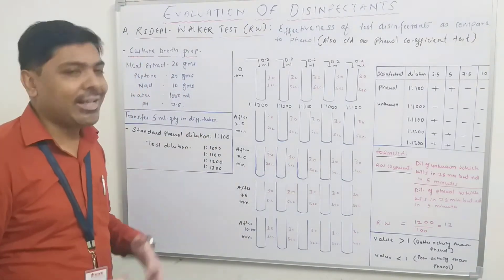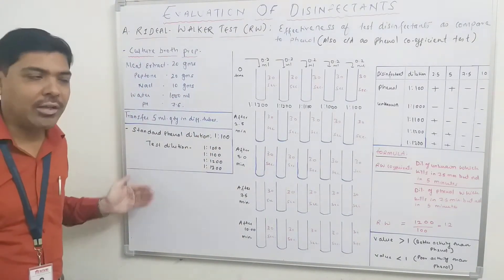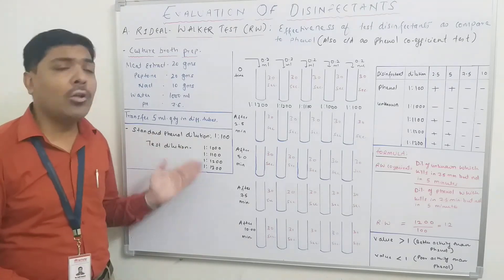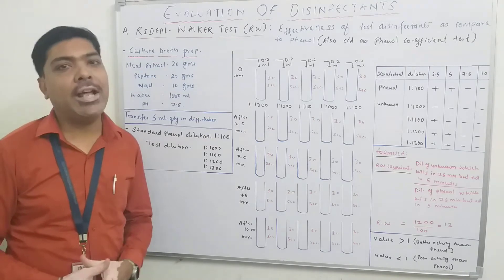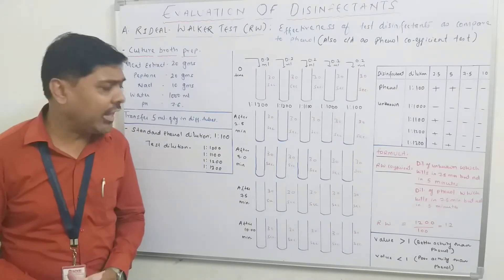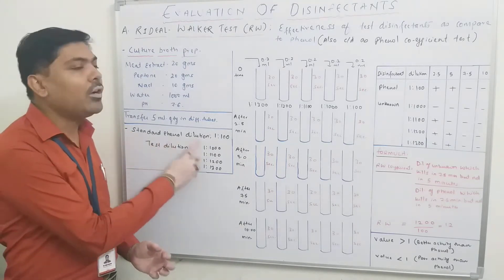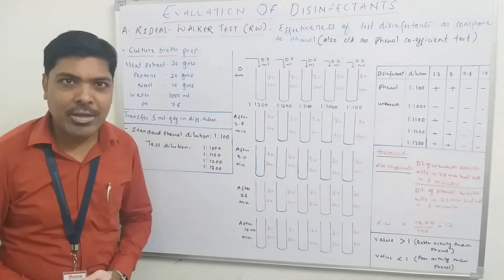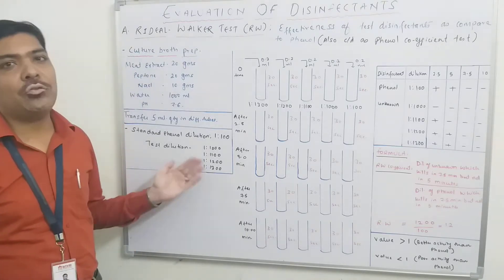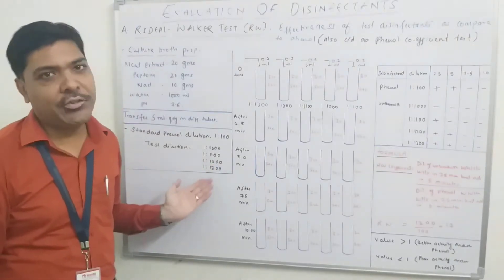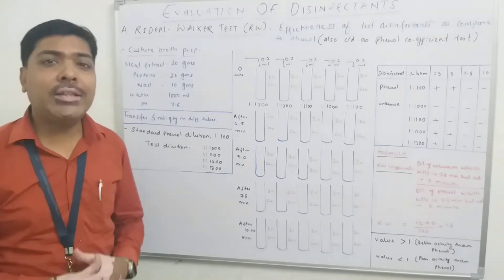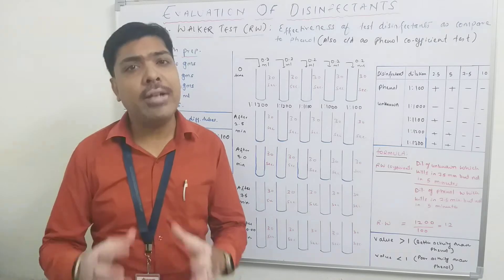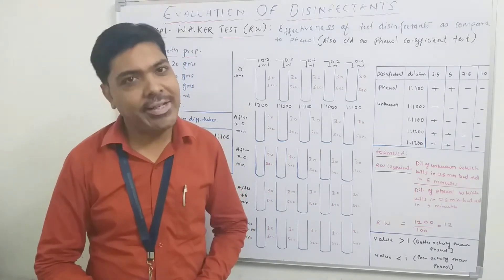Coming to the next step, we need two different solutions. Number one is a standard phenol dilution, and number two is the test dilution. The efficiency of phenol is best at 1%, so generally we use a 1:100 proportion for the phenol dilution. For whatever unknown or test solution needs to be tested, we prepare different concentrations: 1:1000, 1:1100, 1:1200, 1:1300, and so on. These are the two preparations we initially have to do — the culture broth, a dilution of phenol, and dilutions of the test disinfectant.